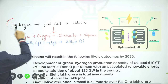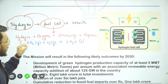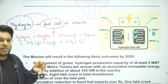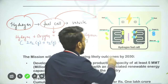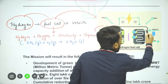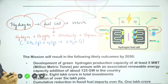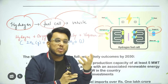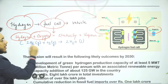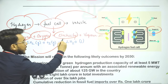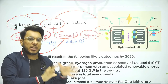When we talk about hydrogen, it can be used in a fuel cell. A fuel cell is a device which uses hydrogen and oxygen — through a chemical reaction, it generates electricity. What will happen? Hydrogen plus oxygen, through chemical reaction, leads to generation of electricity, and the resultant byproduct is just water vapour/steam.